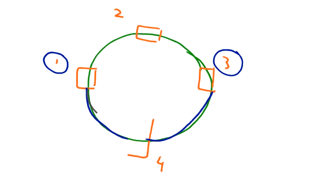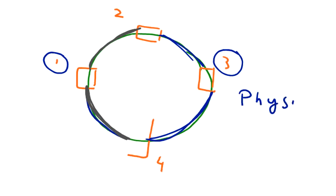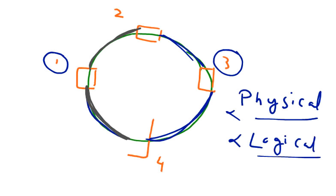Computer one is connected to the server and also to computer two. It's a very simple form of topology — every computer is connected to two of its neighbors and they form a ring. In this picture we have a physical ring, and the data also flows logically in the ring, so it's a physical as well as logical ring topology, or what we more commonly call a ring network.